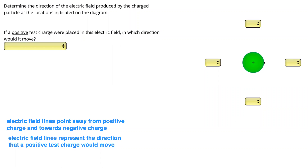In this question, we're provided with the particle's charge. It has a positive charge and we have to add the direction of the field lines. We know field lines point away from positive charge, so since this is positively charged, all our field lines are going to be pointing away. This one will be going upwards and away, this one left and away, this one down and away, and this one right and away. A positive test charge will always move in the direction of the field lines, so in this example it's going to move outwards.